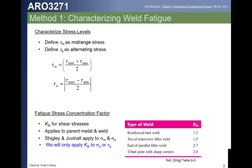For the end of a parallel fillet weld, where the shear stress acts parallel to the weld itself, we get a stress concentration factor at the end of that weld. If we have a T-butt joint with sharp corners — meaning a T-weld where stress acts perpendicular to the fillet — the stress concentration factor is 2. These factors are applied only to the alternating component of the shear stress.